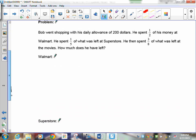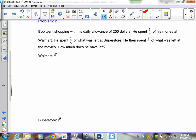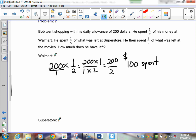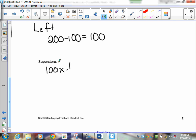Now, this one's a tricky question. Because it says, how much does he have left? He spends what he has left. So, you've got to be very careful how you set this up. Bob went shopping with his daily allowance of $200. He spends half his money at Walmart. So, let's find out how much he spent at Walmart. Walmart is $200 times 1 over 2. If you want to do this as fraction times fraction, remember that every whole number is over 1. So, that means we have 200 times 1 over 1 times 2. So, that's 200 over 2, which means we have $100 spent.